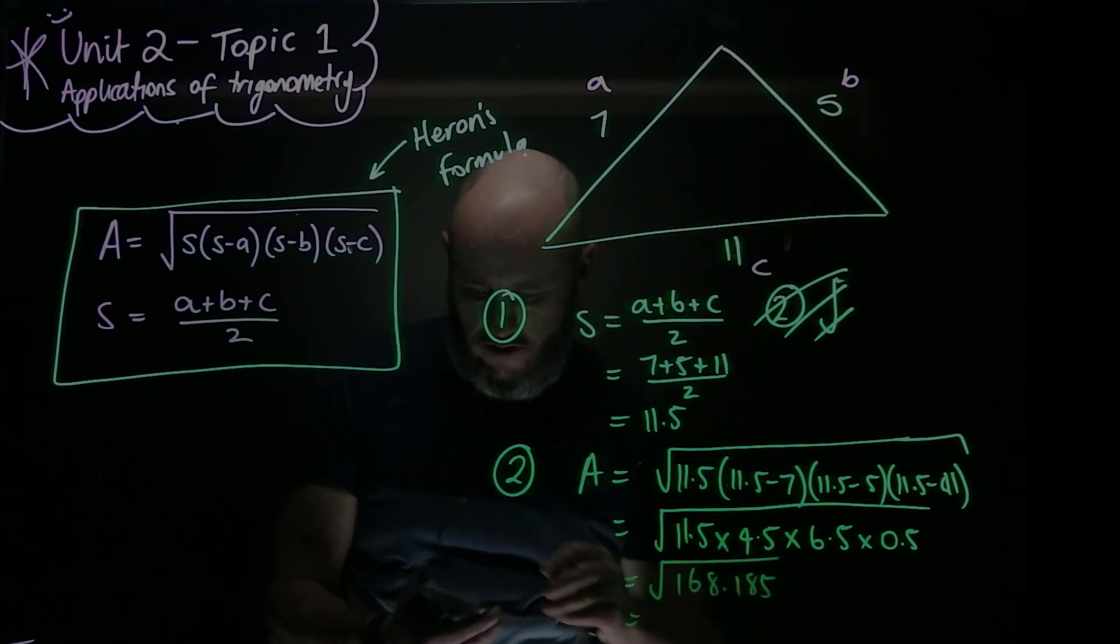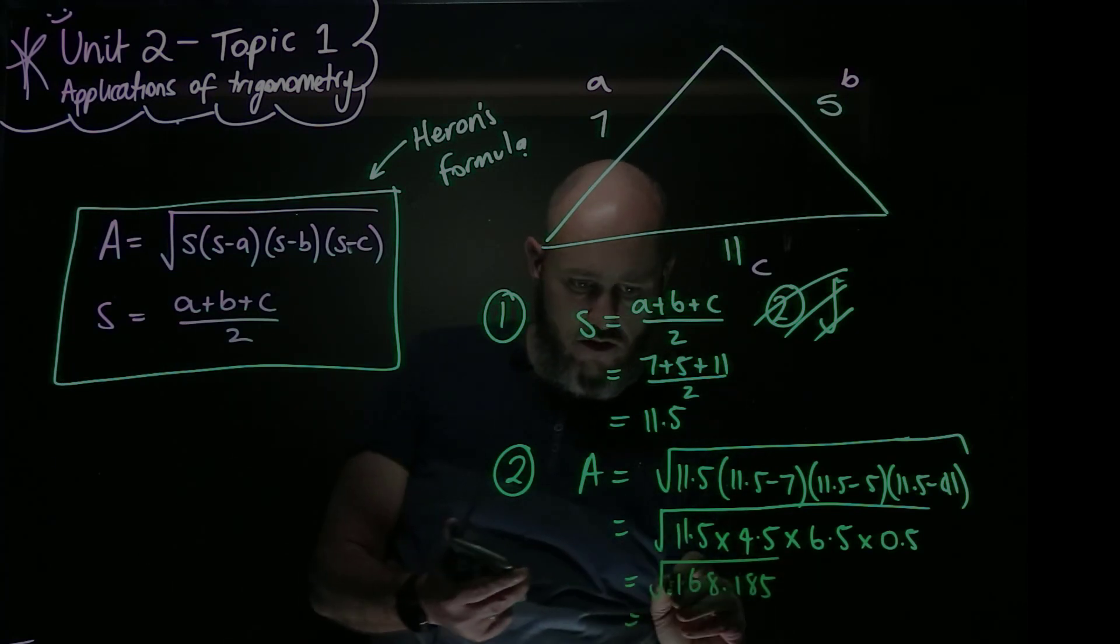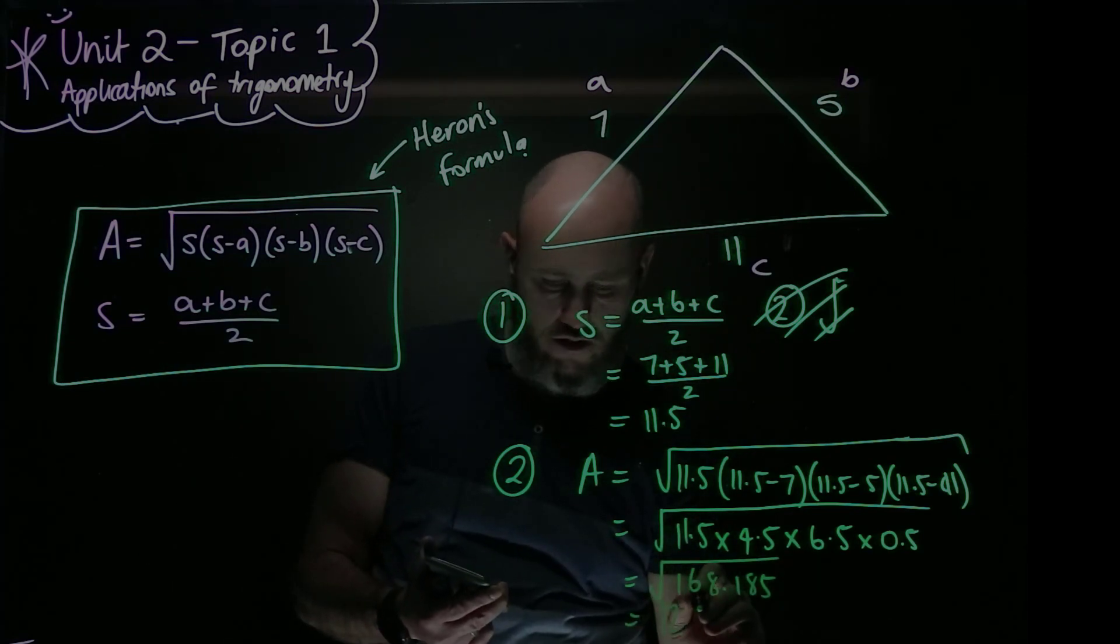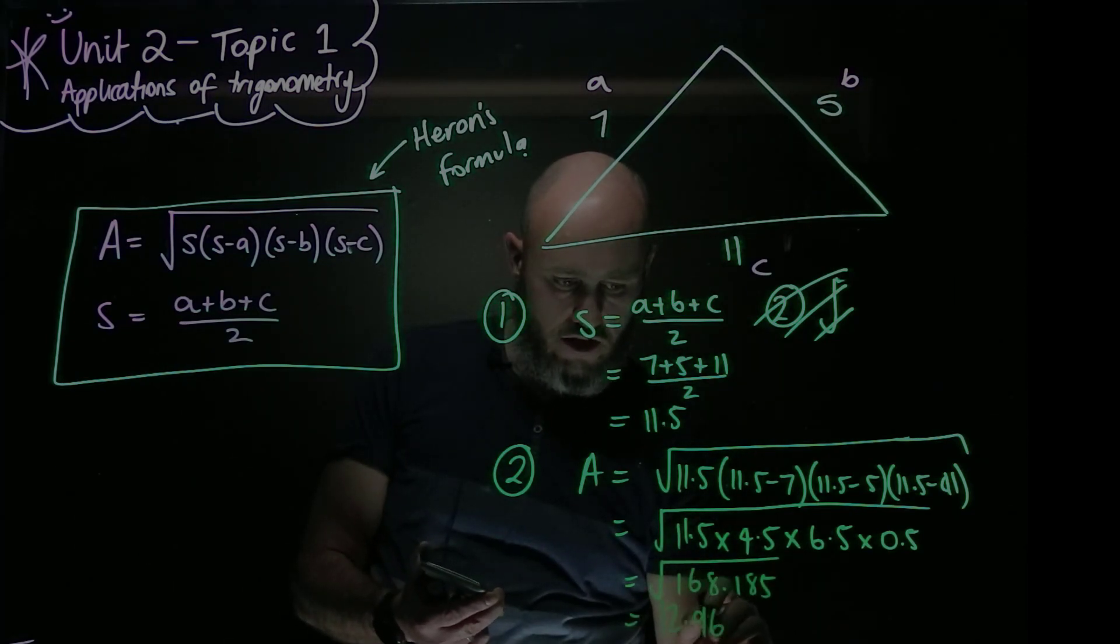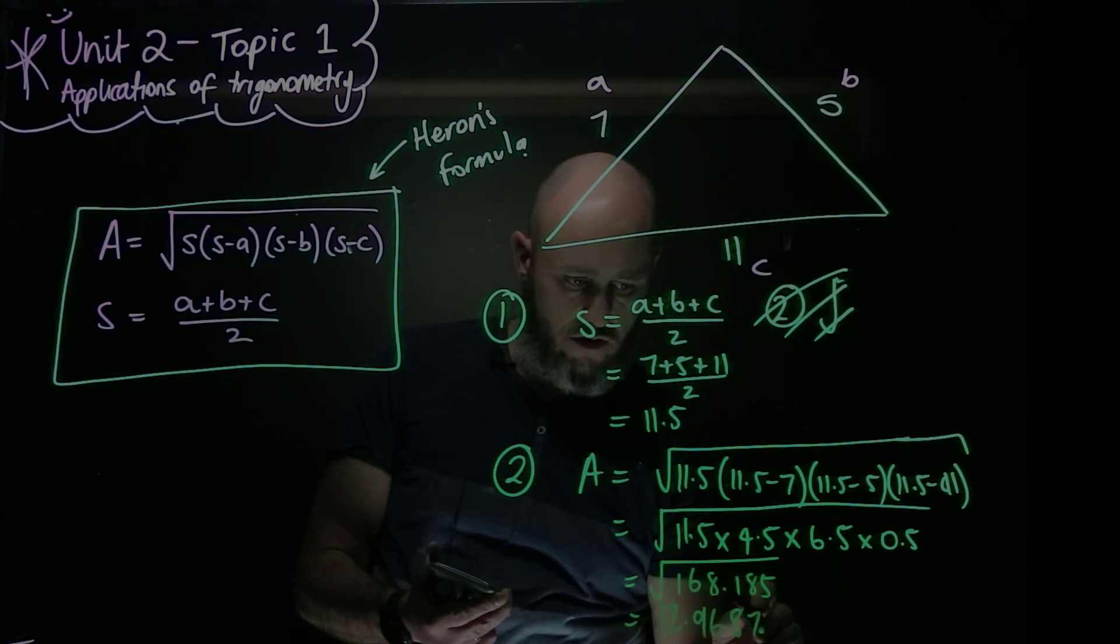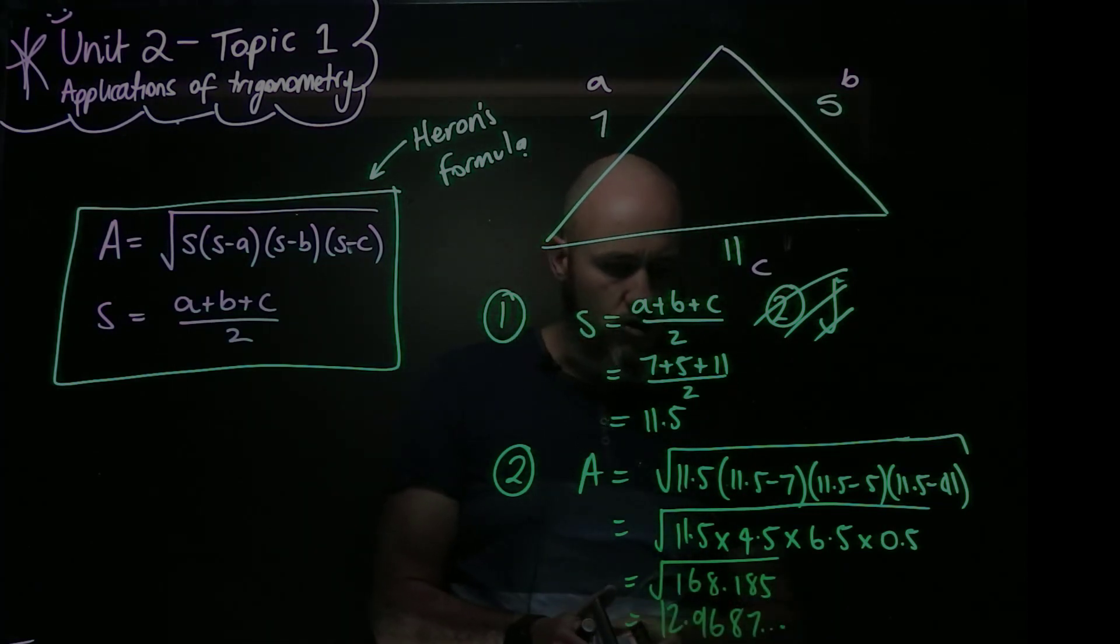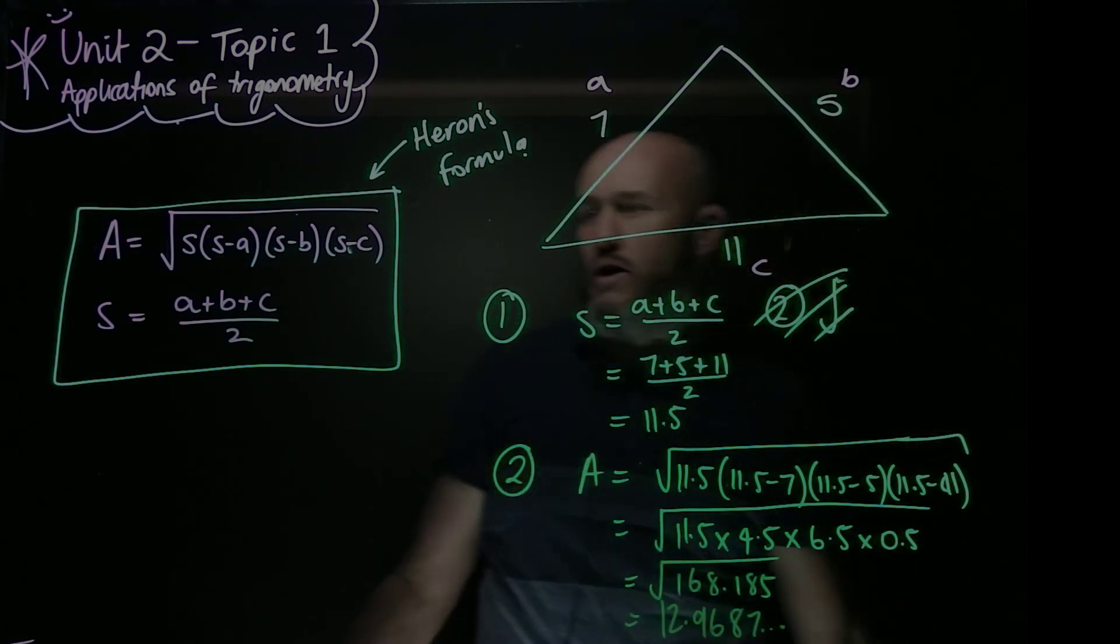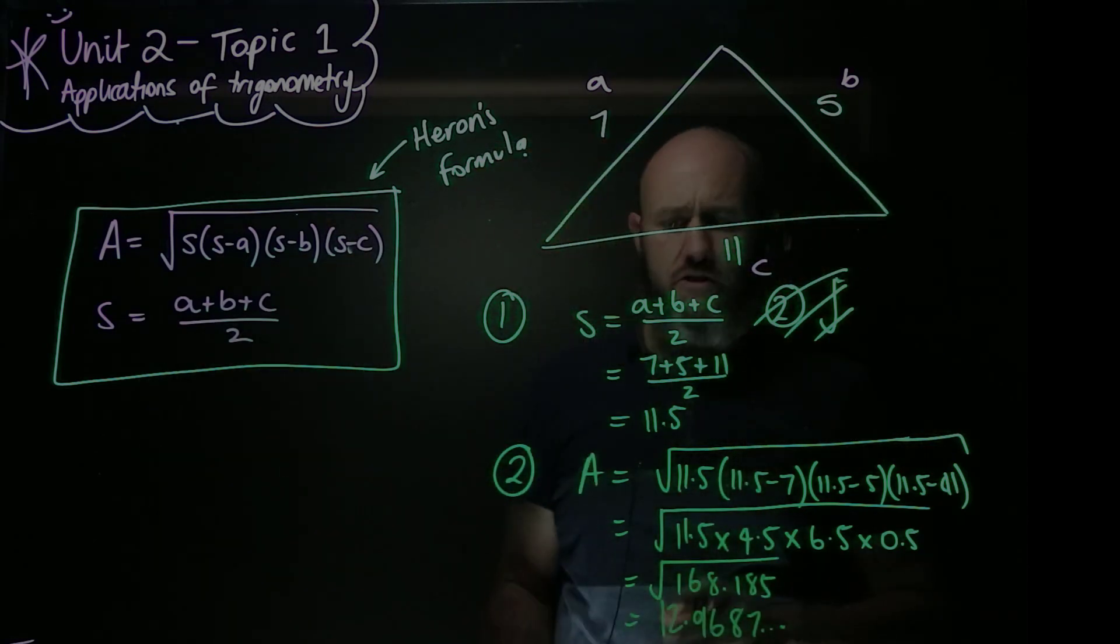And the area, therefore, is equal to the square root of that answer, 12.9687 dot, dot, dot. So 12.97 units squared, whatever, there's no units, whatever the units are.